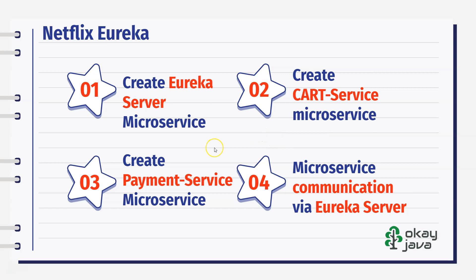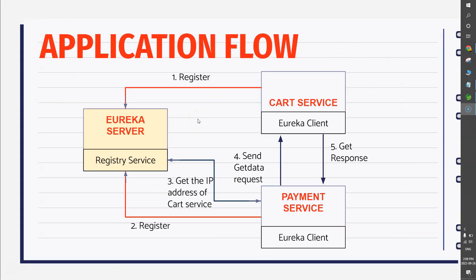Let's have a look at what we are going to cover in this video. First of all, we'll create one microservice and make it a Eureka Server. Then we'll create another microservice called Cart Service, which is going to be our regular service. Then we'll create another microservice called Payment Service. Finally, I will also explain the communication between these two microservices through the Eureka Server.